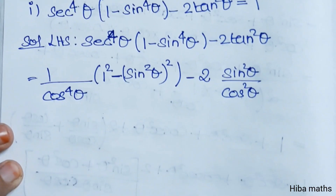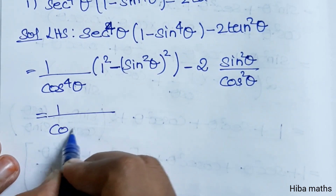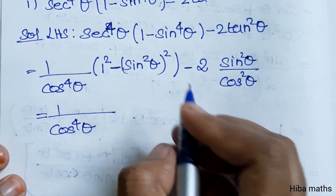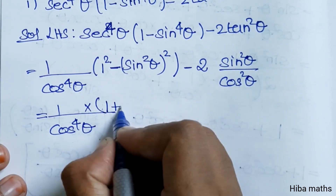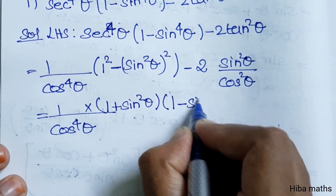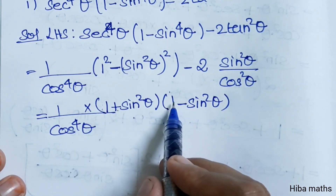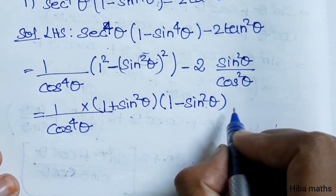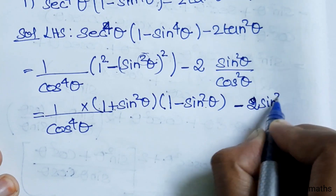Now we have 1 by cos⁴θ. We apply the a² minus b² formula: a² minus b² equals (a plus b)(a minus b). So 1 minus sin⁴θ becomes (1 minus sin²θ)(1 plus sin²θ), minus 2 into sin²θ by cos²θ.